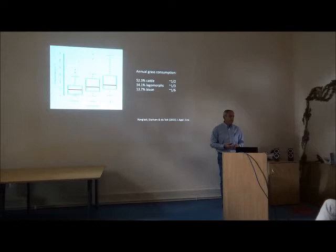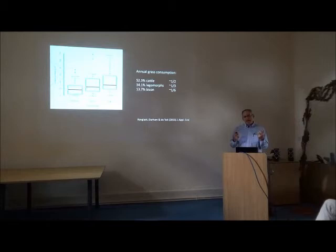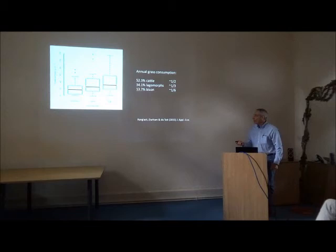So the ranchers vehemently demanding compensation because bison are causing all the damage are wrong — twice as much damage is being done by lagomorphs, which ranchers hadn't even considered. Bison are actually contributing very little to overgrazing. The question then becomes: how can we make bison more valuable to the ranchers so they tolerate them?